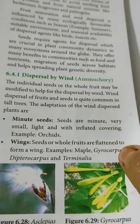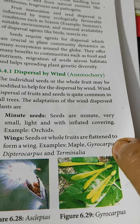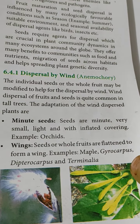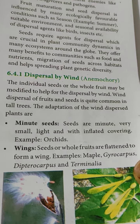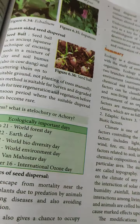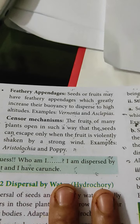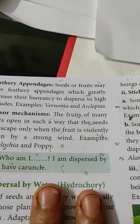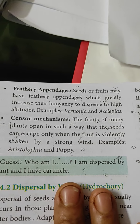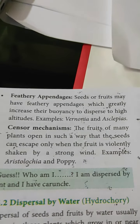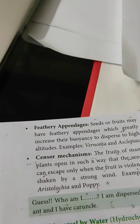The second adaptation is wings. Seeds or whole fruits are flattened to form a wing so that they can fly in the air. Examples: maple, gyrocarpus, dipterocarpus, and terminalia — all having wing-like structures for dispersal. Third is feathery appendages — seeds and fruits may have feathery appendages which greatly increase buoyancy to disperse to various altitudes. Examples: Vernonia, Asclepias, and Tridax.